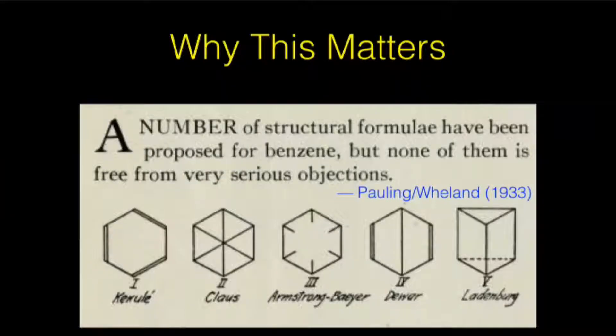Back in the day, in the 1930s — and by the way, Pauling, of the electronegativity scale we talked about on Wednesday — back in the day, they didn't know what benzene was. They could kind of measure some things, but none of it worked. And Pauling wrote: 'A number of structural formula have been proposed for benzene, but none of them is free from very serious objections.'